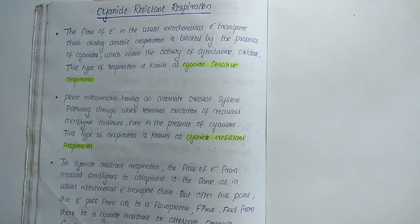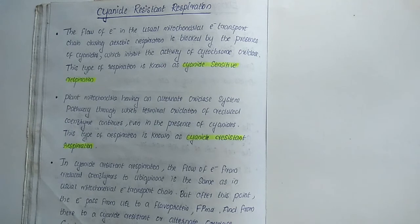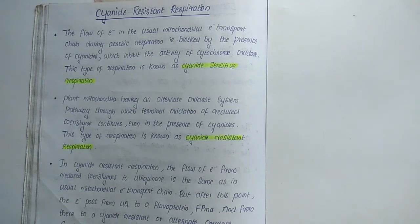The cyanide resistant pathway: the flow of electrons in the mitochondrial electron transport chain is blocked by the presence of cyanide, which is a deadly poison that inhibits the activity of cytochrome oxidase, thereby blocking electron transport. This type of respiration is called cyanide-sensitive respiration. However, plant mitochondria have an alternate oxidase system through which terminal oxidation of reduced coenzymes continues even in the presence of cyanide, and this is called cyanide-resistant respiration.